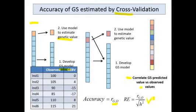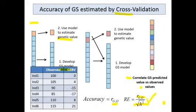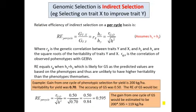The relative efficiency predicts what the gain from genomic selection will be relative to the gain you might have gotten from phenotypic selection. It is simply the accuracy of genomic selection divided by the square root of the heritability of the phenotypes used in the model from the training population.